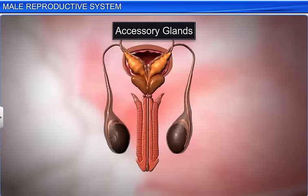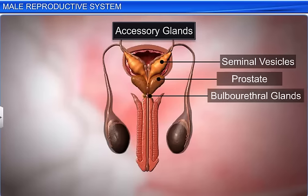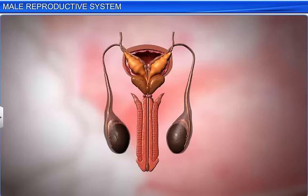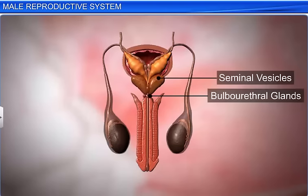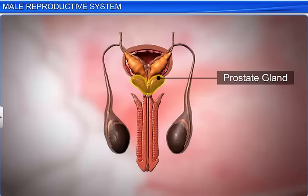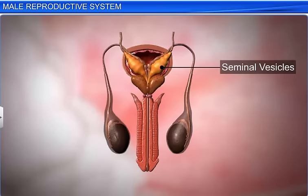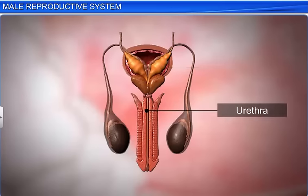The male accessory glands include a pair of seminal vesicles, a prostate, and a pair of bulbourethral glands. They secrete seminal fluid that contains fructose and prostaglandins. The prostate gland is present at the base of the urinary bladder, around the base of the seminal vesicle. It opens into the urethra through many ducts.